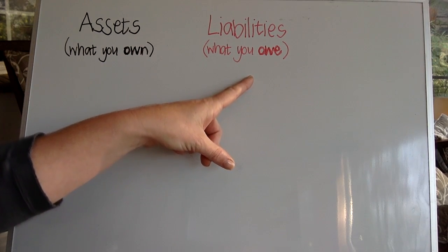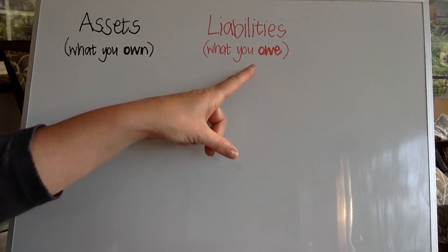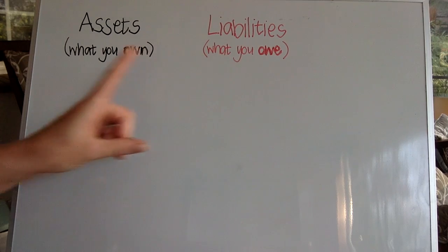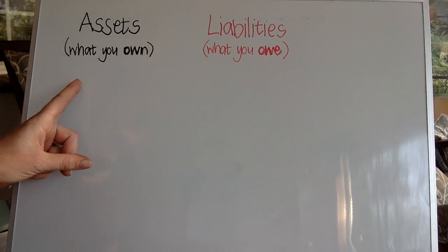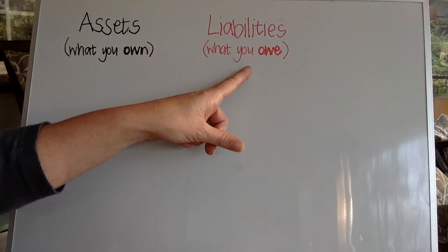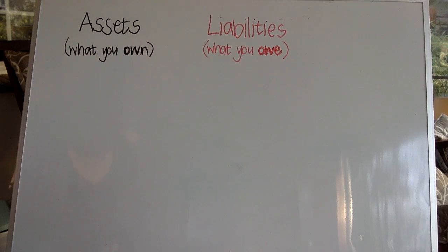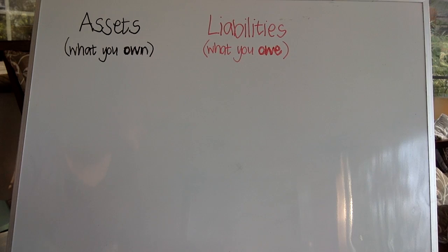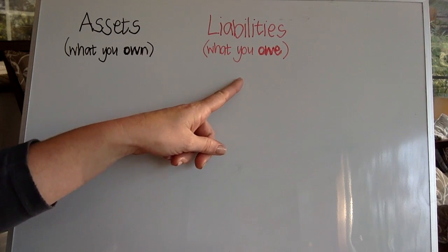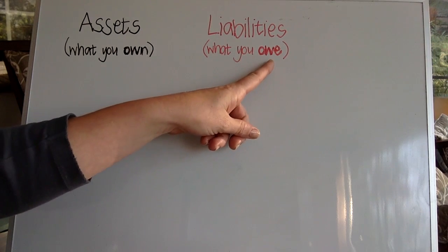Liabilities, on the other hand, are kind of like the opposite of assets, because liabilities refers to what you owe. So maybe you borrowed some money from your mom to go and buy a birthday present for a friend. That 200 rand that you need to pay her back would be a liability because you owe it to her.